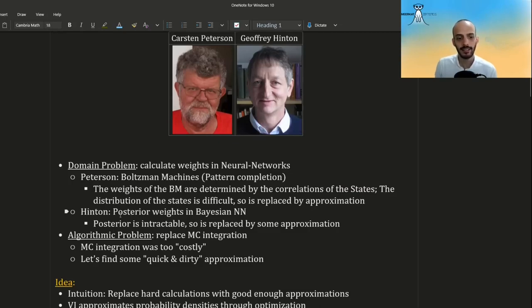And in Hinton's case, the problem is to find posterior weights in Bayesian neural networks, where you place a prior over the weights, and then after looking at the data, you are looking for the posterior weights. But the true posterior is intractable, so it's replaced by some approximation.